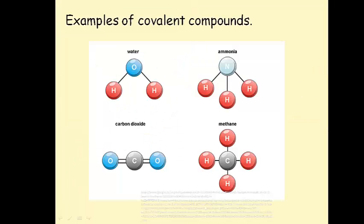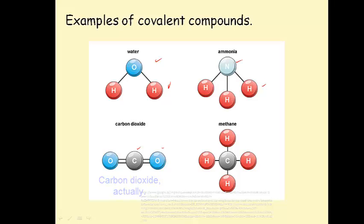Here are some examples of covalent compounds: water, made of hydrogen and oxygen; ammonia, made of nitrogen and hydrogen; carbon dioxide, made of carbon and oxygen; and methane, made of carbon and hydrogen.